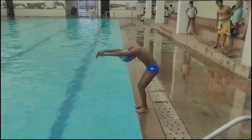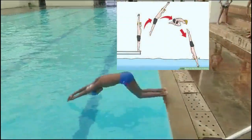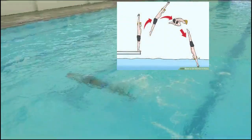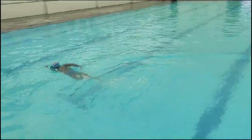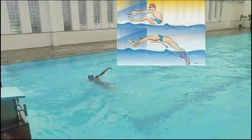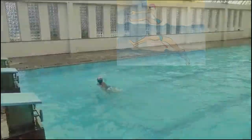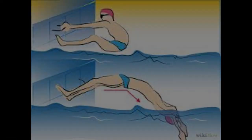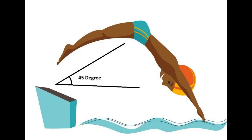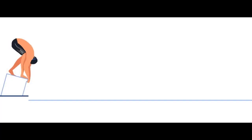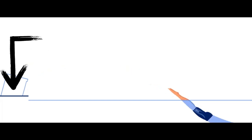While swimming, if the take-off angle is too high, the angle of entry will be steep, leading to a deep gliding pattern and requiring more time to return to the surface. If the swimmer's take-off angle is too low, then the entry will be flat, resulting in increased drag when entering the water. In contrast, take-off angles should be closer to 45 degrees towards the water, and the angle between the hip and the knee will be over 90 degrees.